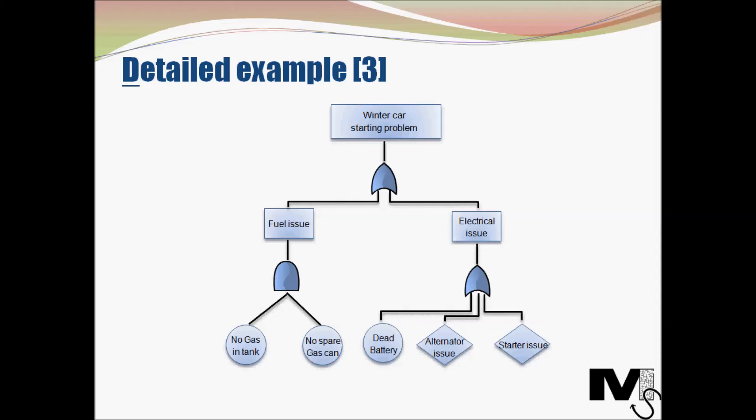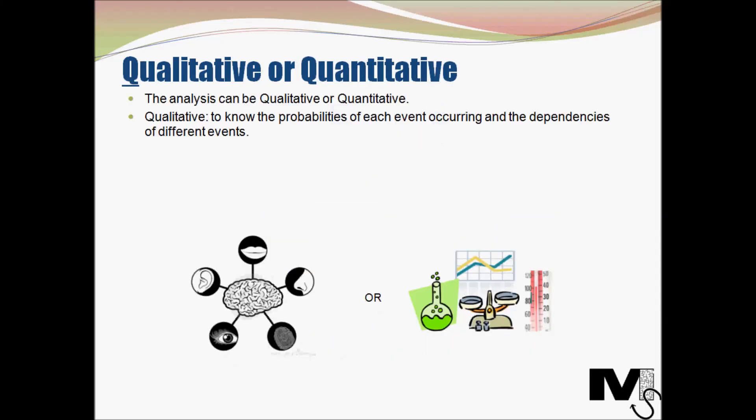Looking at what sort of analysis we have carried out, we have actually carried out a qualitative analysis in this example and in both our examples. When it comes to analyzing the results of an FTA the analysis can be qualitative like in our examples or quantitative. In our qualitative analysis we were able to identify basic events, failure parts and other contributing factors quite logically. So we were able to use our senses, gauge the situation at hand and come up with basic events. We were able to logically figure out what the events are.